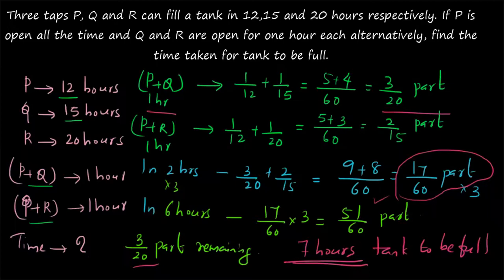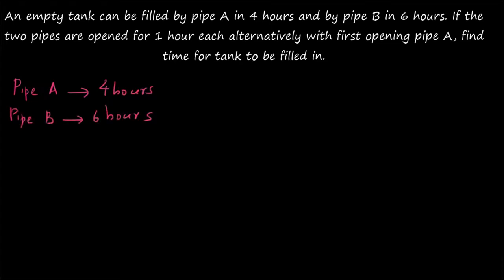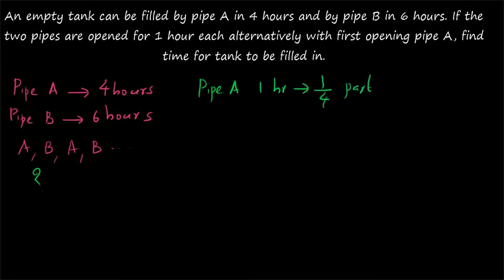Question number two: an empty tank can be filled by pipe A in four hours and pipe B in six hours. The two pipes are opened for one hour each alternatively, with pipe A opening first. Pipe A will work for one hour, then pipe B, then A again, and so on. In one hour, pipe A fills 1/4 part and pipe B fills 1/6 part.